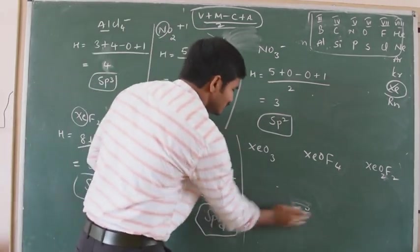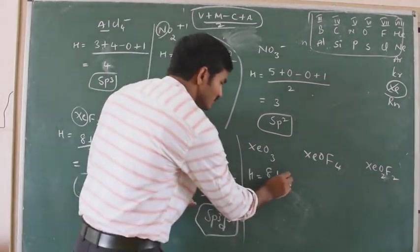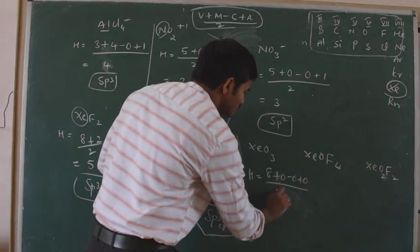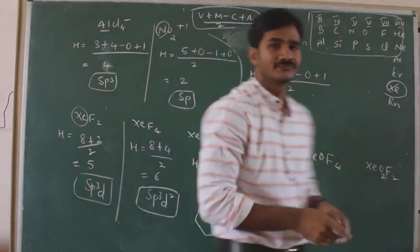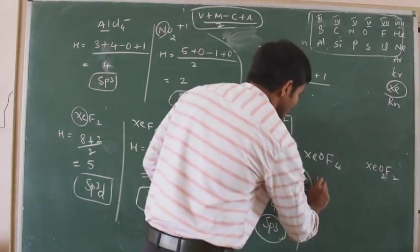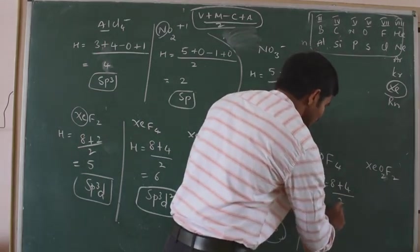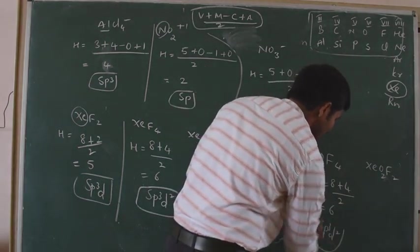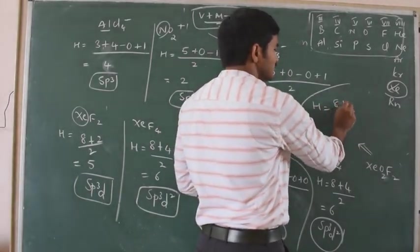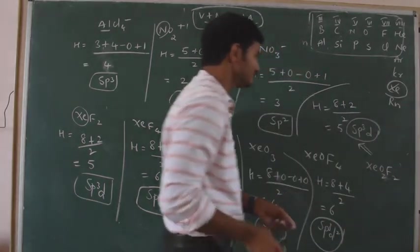For XeO3: Xenon group 8, zero monovalent atoms, no charge — 8 / 2 equals 4, SP3 hybridization. For XeO4: Xenon group 8, monovalent atoms 4 (using the formula approach), so (8 + 4) / 2 = 6, meaning SP3D2. For XeO2F2: Xenon group 8, monovalent atoms are 2, so (8 + 2) / 2 = 5, SP3D hybridization.